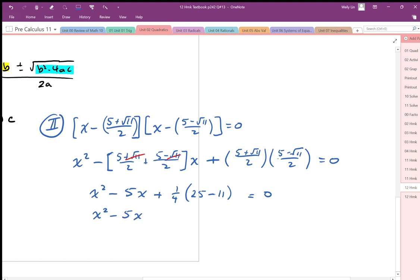And so we end up with 14 over 4, and that simplifies to 7 over 2, which we had before.